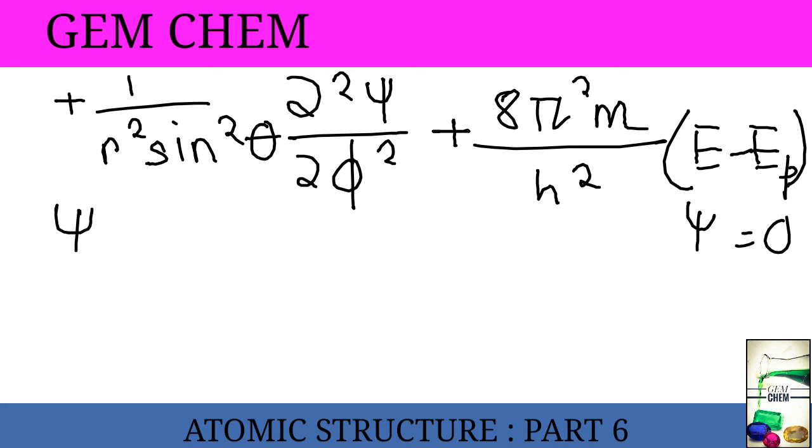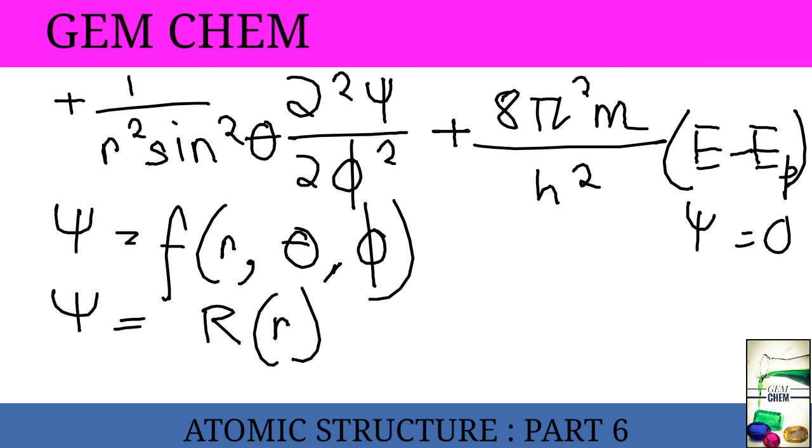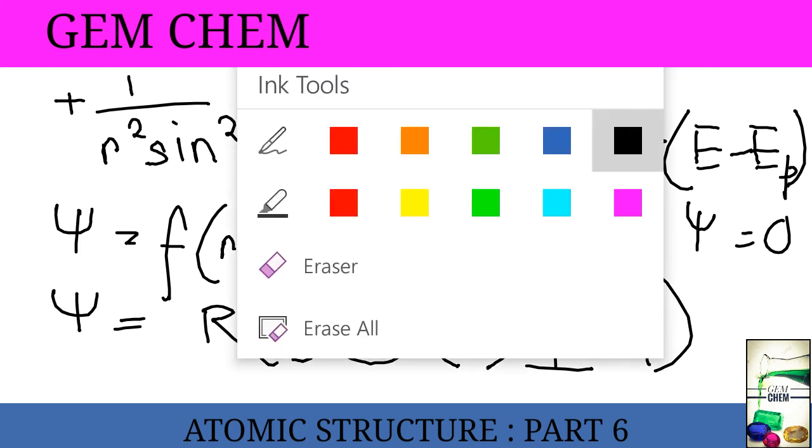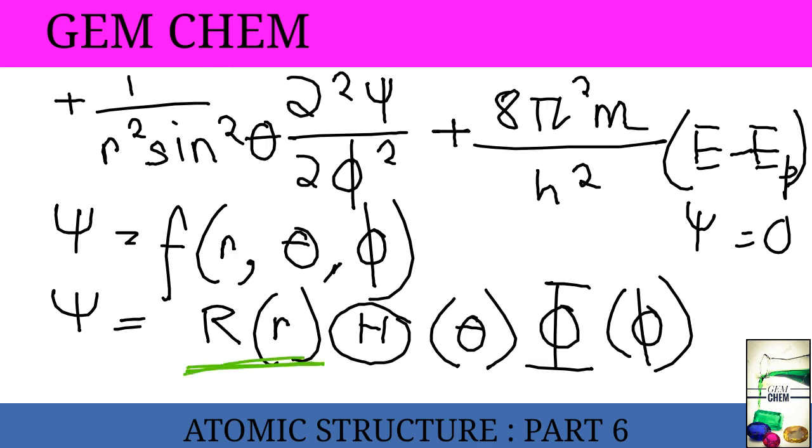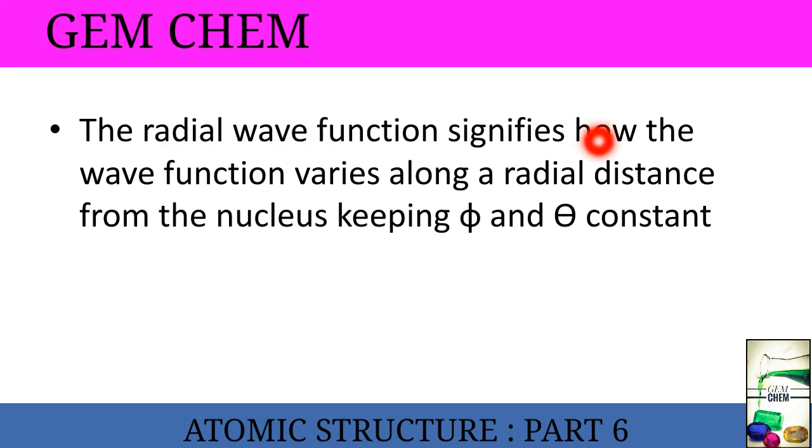Now Ψ here is a function of the three coordinates: r, θ and φ. So now we can write Ψ as R(r) times Y(θ, φ). Now we have to know that this part is our radial wave function and these two parts are our angular wave function, written as Y(θ, φ). The radial wave function signifies how the wave function varies along a radial distance from the nucleus keeping φ and θ constant.